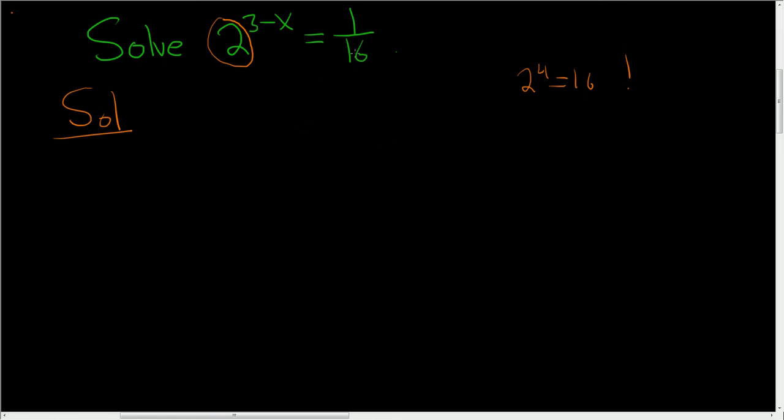So what we'll do is we will rewrite 16 as 2 to the 4th. So we end up with 1 over 2 to the 4th. The next thing we'll do is we'll bring the 2 upstairs. So we have 2 to the 3 minus x equals 2 to the negative 4.